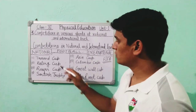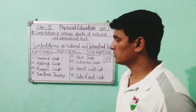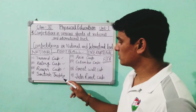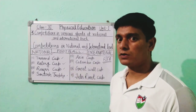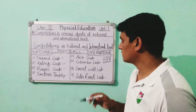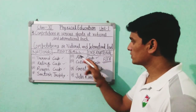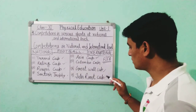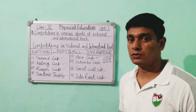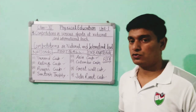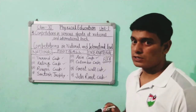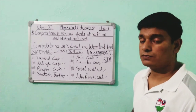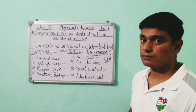For Football, national level competitions include the Durand Cup, which is very famous, the Kalinga Cup, Rovers Cup, Santosh Trophy, and Subroto Cup. At the international level, there is the Asia Cup, Colombo Cup, Great Wall Cup, Jules Rimet Cup — which is important — and the FIFA World Cup. FIFA stands for Federation Internationale de Football Association.